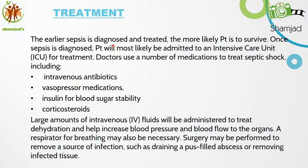The earlier sepsis is diagnosed and treated, the more likely the patient is to survive. Once sepsis is diagnosed, the patient will most likely be admitted to the intensive care unit. Doctors use a number of medications to treat septic shock, including IV antibiotics, vasopressor medications, insulin for blood sugar stability, and corticosteroids. Large amounts of IV fluids will be administered to treat dehydration and help increase blood pressure and blood flow to the organs. A respirator or ventilator may be necessary to assist breathing, and surgery may be performed to remove the source of infection, such as draining an abscess or removing infected tissues.